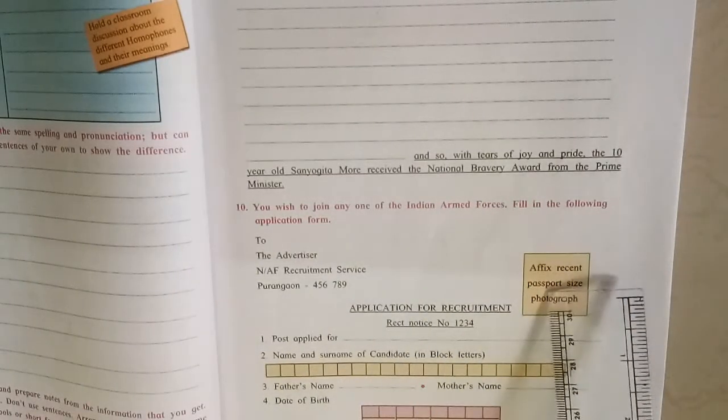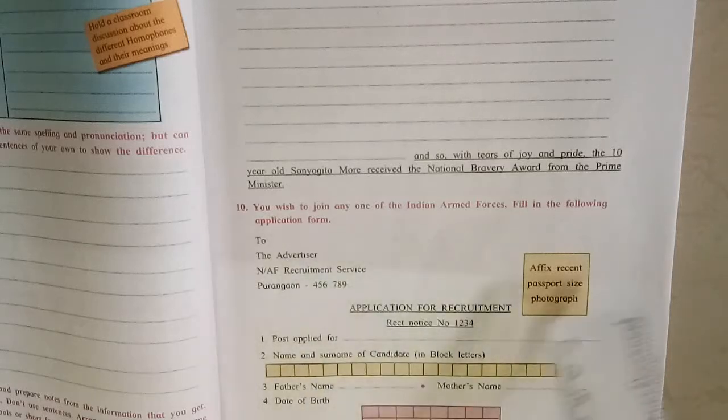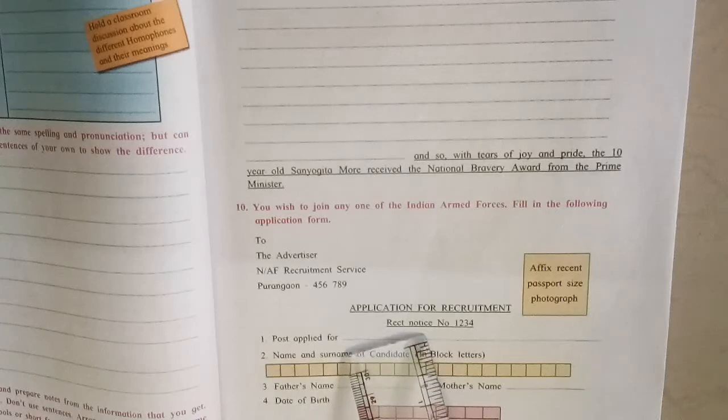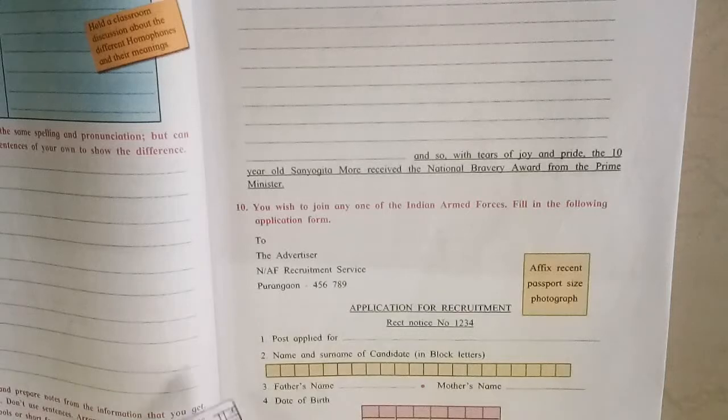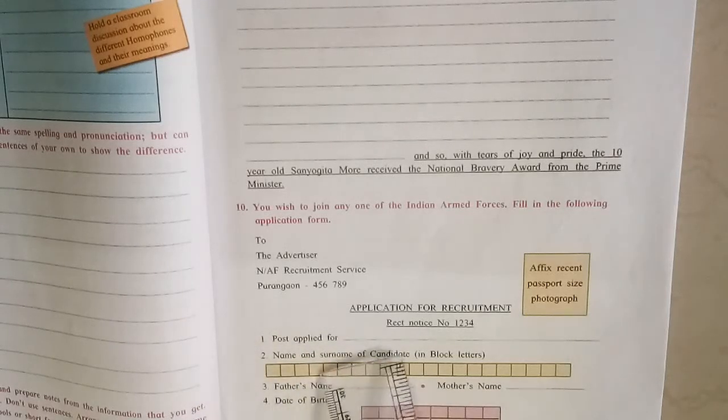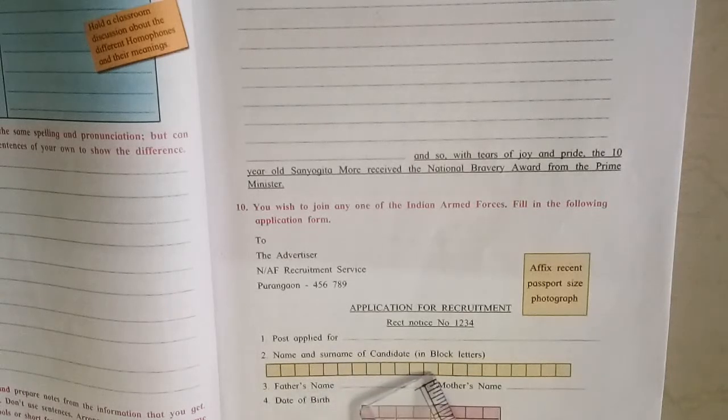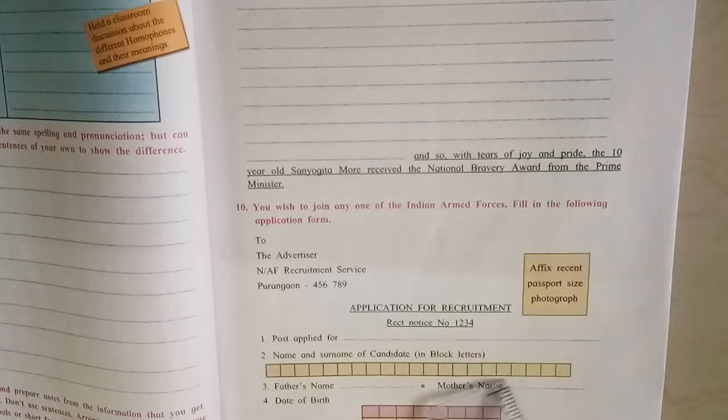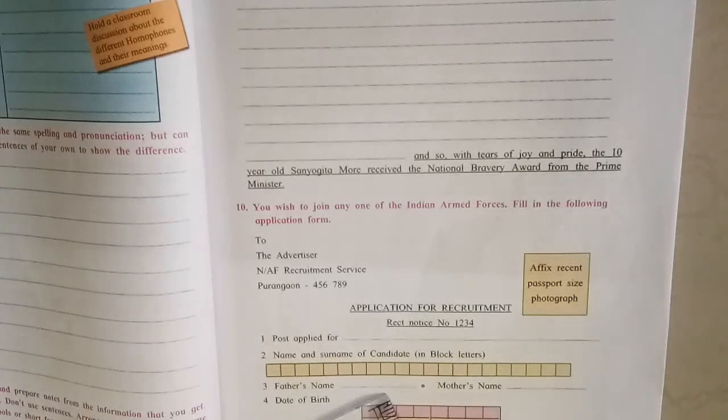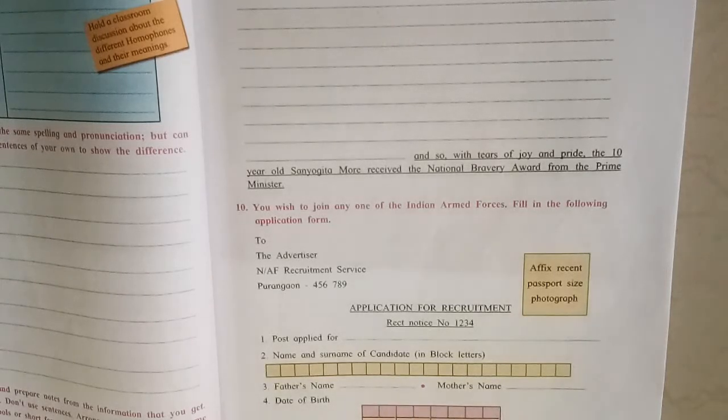And see here one question given. You wish to join any one of the Indian armed forces. Fill in the following application form. See already given here: photo, affix recent passport photo size. Then here application for recruitment, then receipt number whatever is given there. And post applied for: you write which post - flying officer or commander, whatever it is. And name and surname of candidate in block letters. That means only you have to write capital letter. First name, leave one box, then your father name, then one box you have to leave, then your surname. After that father's name here, again in block letter you mention. And your mother's name. And your date of birth. DD means which date, and MM means month - for example if February means 02, and your year 1998 like that you write.